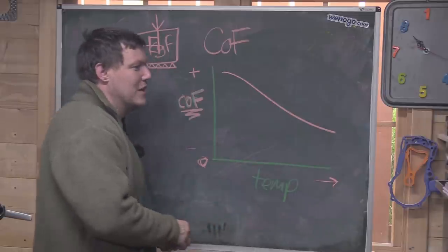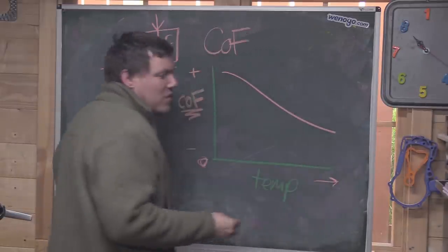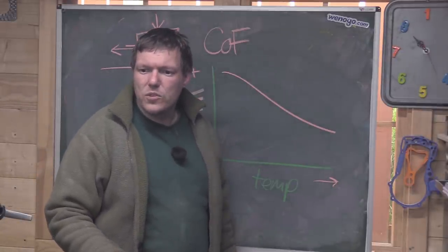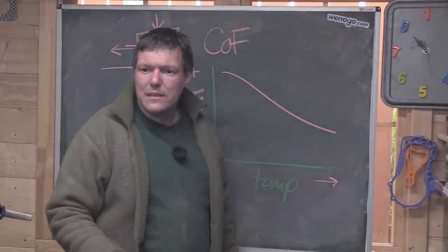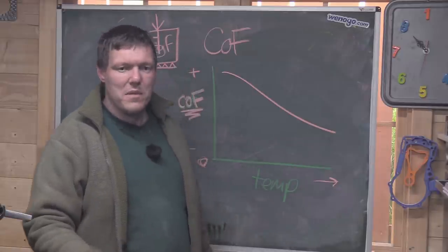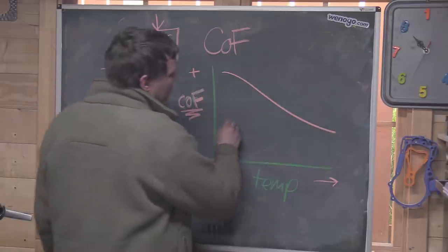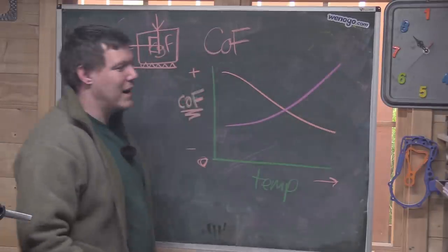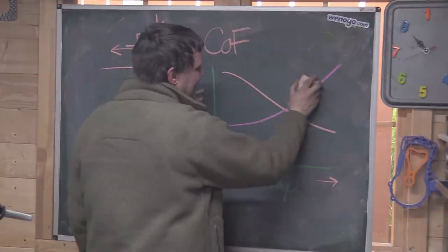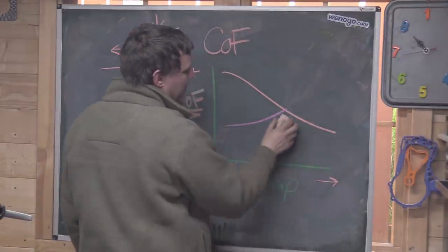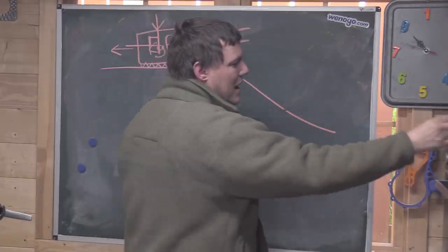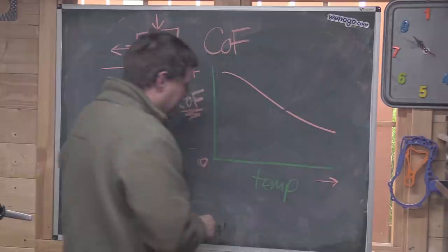Stuff like talc, graphite, molybdenum disulfide, they have CoFs that do this with temperature, the twats. But minerals and stuff, non-metals. Now you might say graphite is almost carbon, but graphite's a bit of a funny one. It depends which carbon you use.